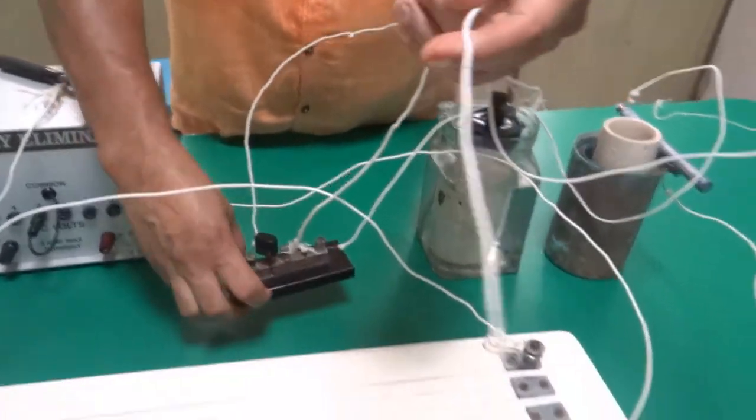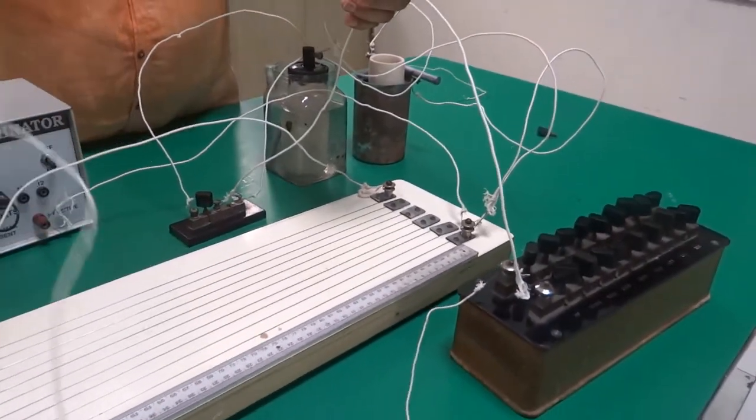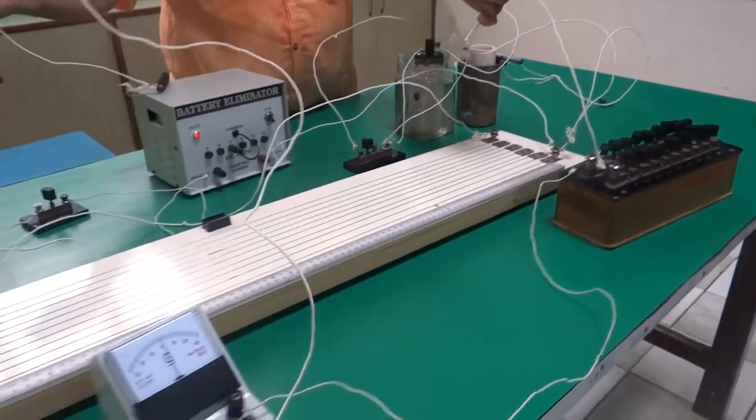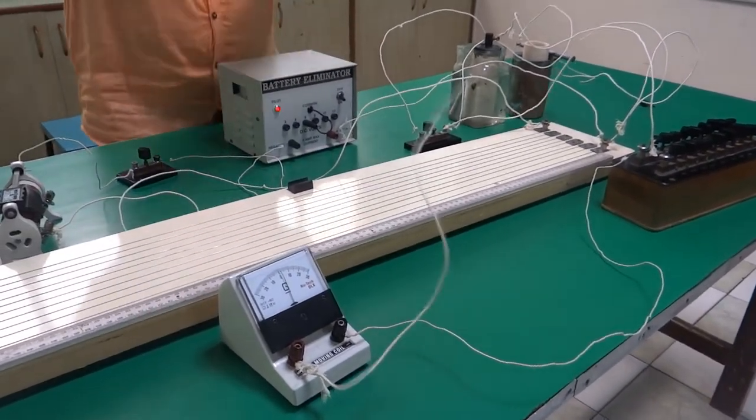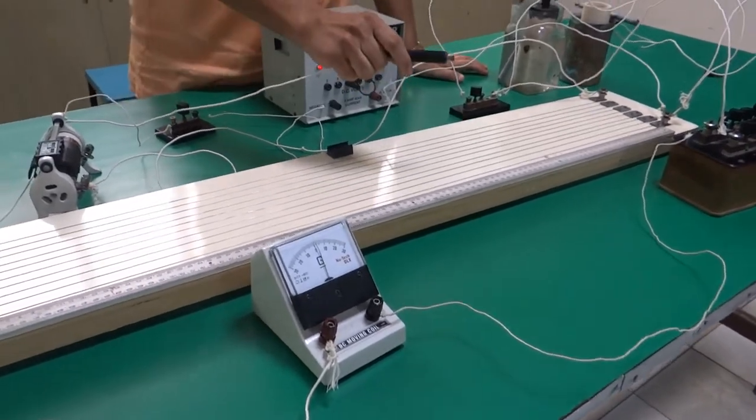The central part is connected with a galvanometer and jockey. You see through a resistance we have connected here, a galvanometer and this is a jockey.